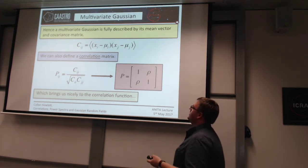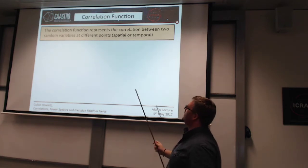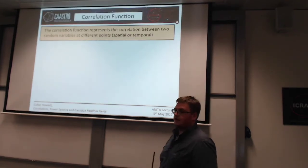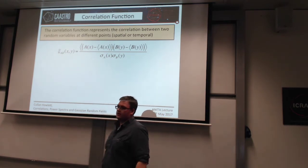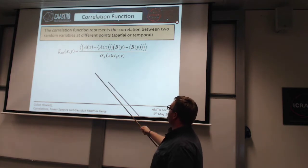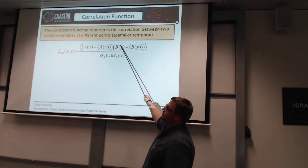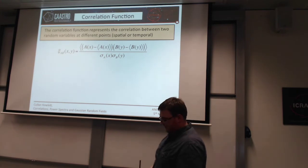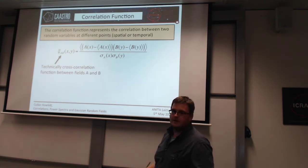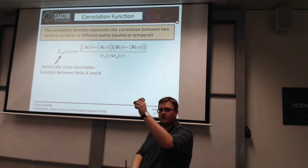From the covariance and the multivariate Gaussian distribution, we can define a correlation function, which represents not just the correlation between two sets of variables, but the correlation between two random variables at different points. Here I've written the correlation function between two fields A and B — basically this is just the covariance between field A and field B, but now at point x and point y, not necessarily at the same point, divided by the variance in those two fields. This is the cross-correlation function. More commonly we look at the autocorrelation function — replacing B with A — which tells you how different points in a single field are correlated with each other.